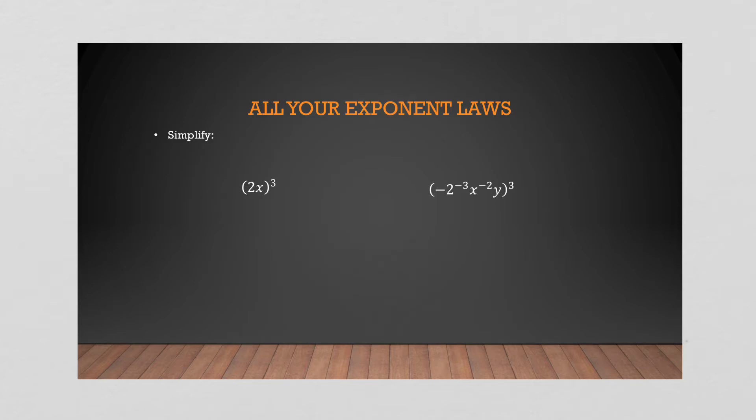So simplify. The important thing to acknowledge on this first one, the 2x all to the power of 3, is that it's not 2x as an entity. It's 2 times x, which means it's 2 to the power of 1, x to the power of 1. So when you have a power outside the brackets, remember we power to a power, so we multiply it in. It's going to multiply into both, which is going to give us 2 cubed x cubed. And then 2 cubed is 8x cubed. So you've got to make sure you're waterbombing into everything. Even if it's a number next to a letter, remember that they're separate entities.